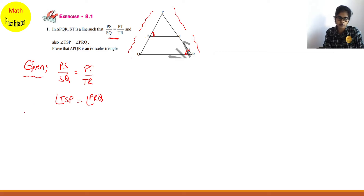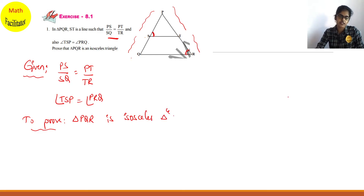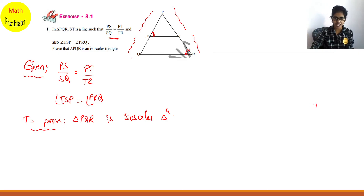What you have to prove is that triangle PQR is an isosceles triangle. How will you prove it is an isosceles triangle? Whenever you see what you have to prove, you should immediately identify the property. In an isosceles triangle, two sides are equal.